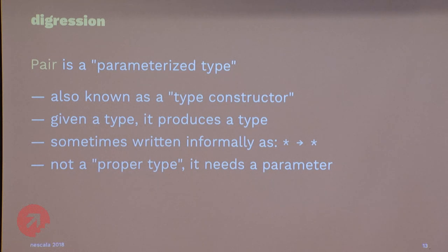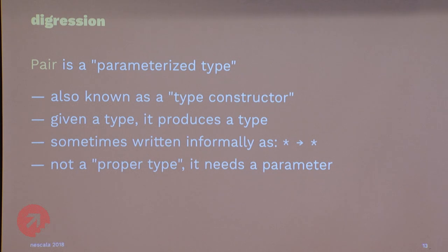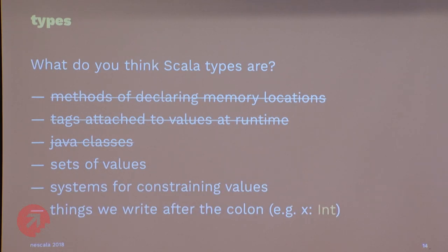To be more explicit, Pair is a parameterized type, also known as a type constructor — written as star arrow star in Haskell notation. Pair isn't even really a type itself; it produces types when you feed it types. So Pair is a type constructor that produces proper types when given proper types as arguments. We've ruled Java classes off the list as a definition of types.